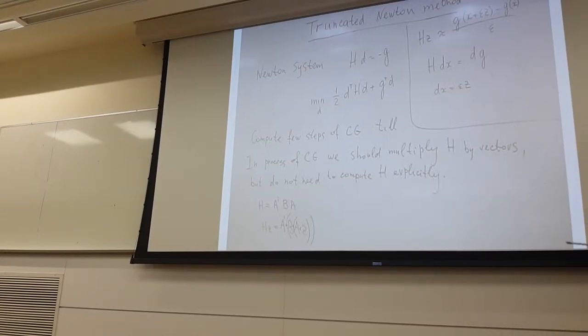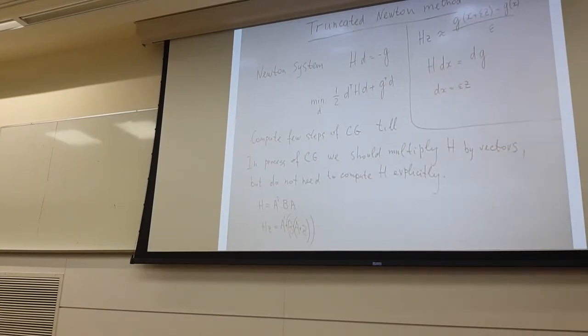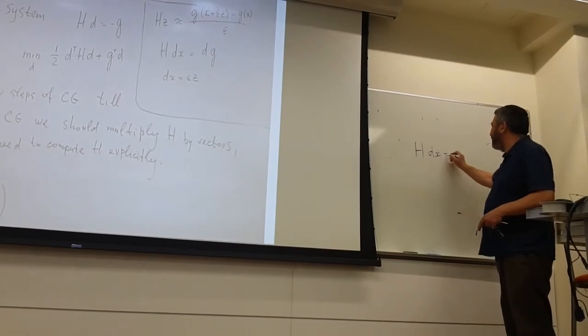Now you just should believe me if I have a function, first of all computing gradient is about the same as computing function if I do it in clean and clear form, and the second message, multiplying Hessian by arbitrary vector is also about as computing gradient even if you want to do it exactly. One more possibility if we want to do it approximately, we have this nice relation that Hessian multiplied by dx is dg.